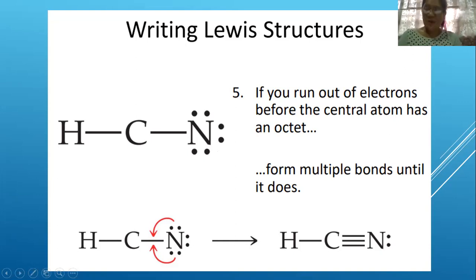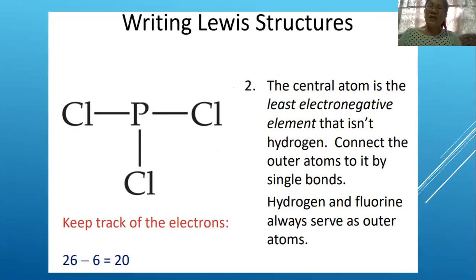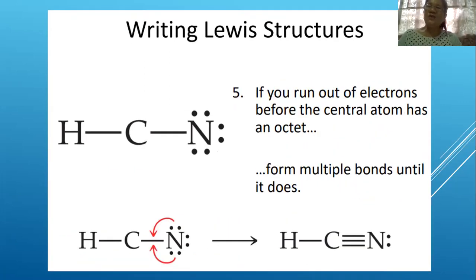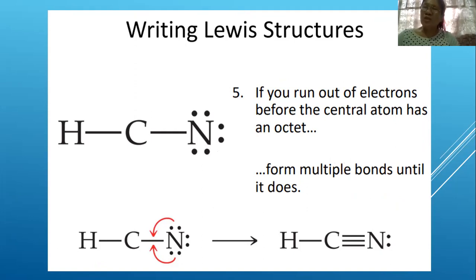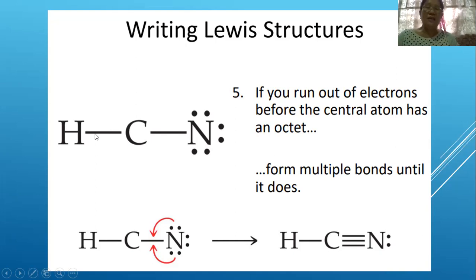There will be 10 electrons total. For the second rule, we identify the central atom. Hydrogen cannot be placed at the center — it is always on the side. Between carbon and nitrogen, carbon is less electronegative, so carbon will be at the center, with hydrogen on one side and nitrogen on the other. After placing single bonds, 10 minus 4 equals 6 remaining electrons.